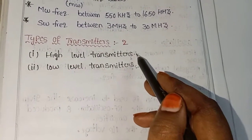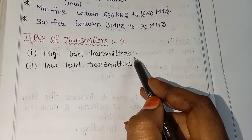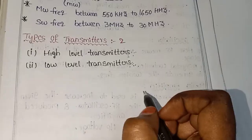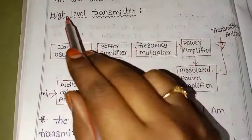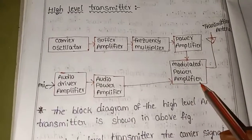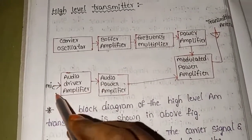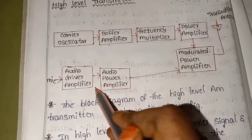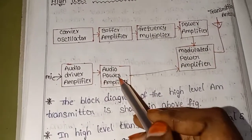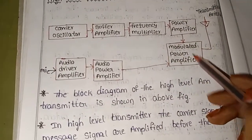This is the block diagram. I will explain the block diagram of the High Level Transmitter. First is the mic, which connects to the audio driver amplifier. The audio driver amplifier connects to the audio power amplifier, and the audio power amplifier connects to the modulated power amplifier.